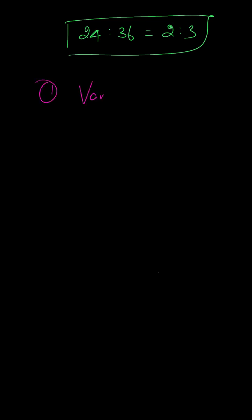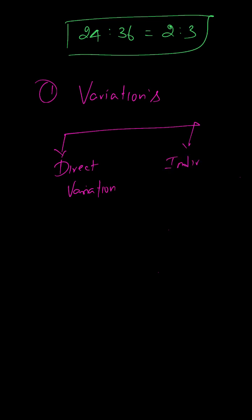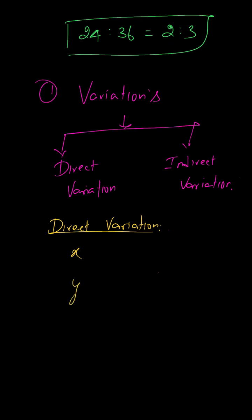Now the first important application topic: variations. There are two types of variations — direct variation and indirect variation. We will look at both in a little detail. Direct variation and indirect variation are the key concepts here.